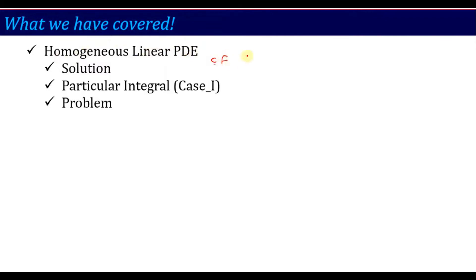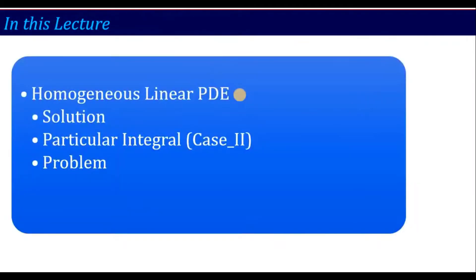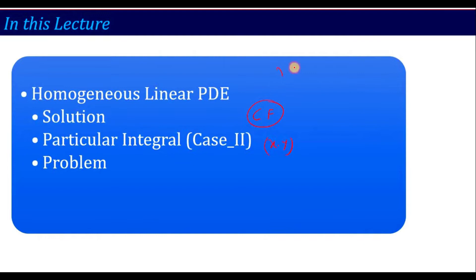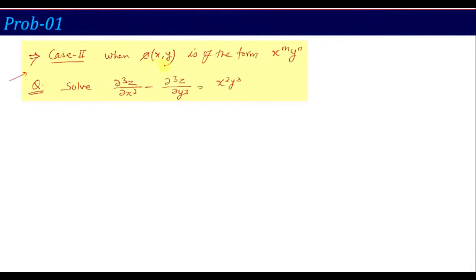In the previous lecture we covered complementary function as well as PI calculations, and we saw Case 1 of PI — that is when the right hand side is of the form AX plus BY. Now in this lecture we are going to discuss the next case. The CF calculation will be the same, but here I will discuss the particular integral Case 2, when the right hand side is in the form X into Y, i.e., X to the power M and Y to the power N.